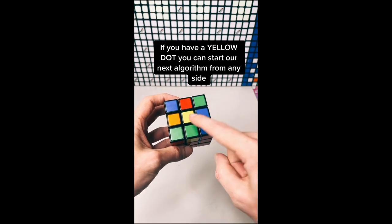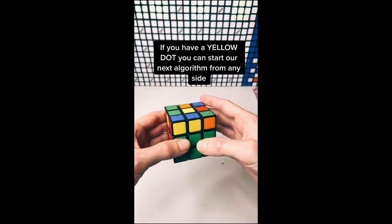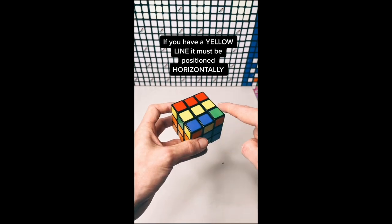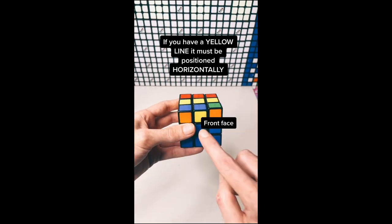If you have a yellow dot, you can start our next algorithm from any side, as long as yellow is on the up face. If you have a yellow line, it must be positioned horizontally.